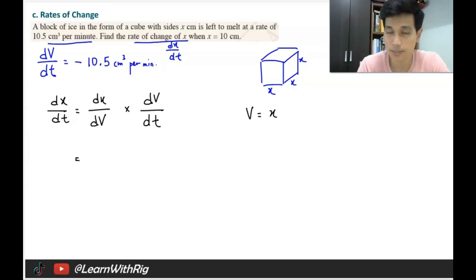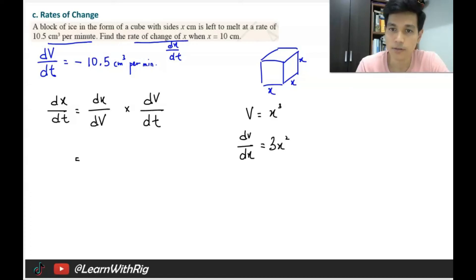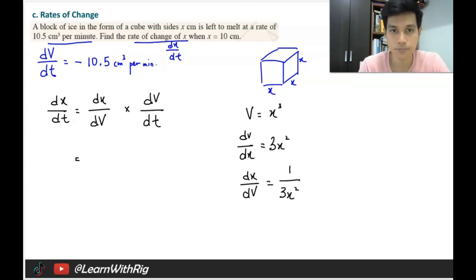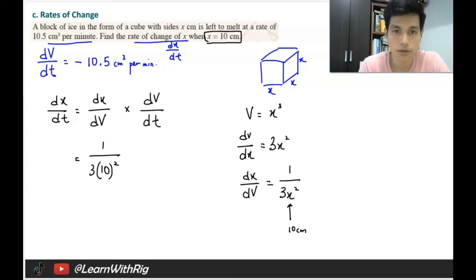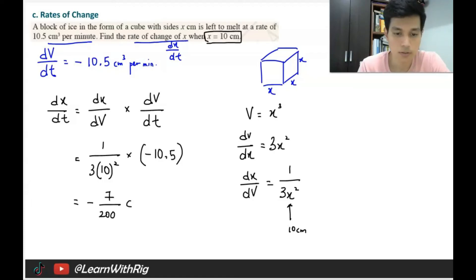Substituting x = 10 cm: dx/dV = 1 over 3(10²) = 1/300. Then multiply by dV/dt = −10.5. So dx/dt = (1/300)(−10.5) = −7/200 cm per minute. The negative sign confirms the side length is decreasing.